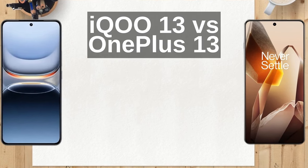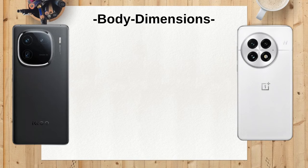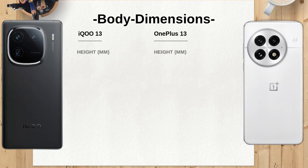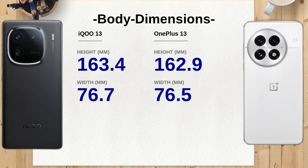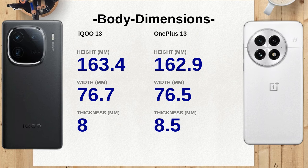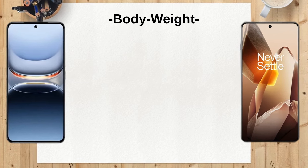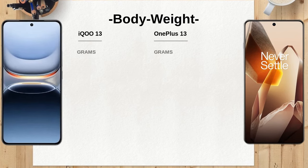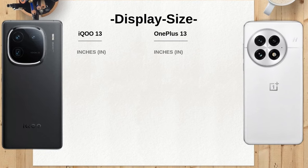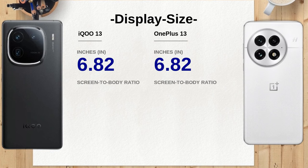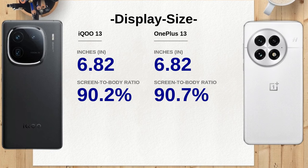The iQO13 measures 163.4 mm in length, making it slightly longer than the OnePlus 13, which is 162.9 mm. This difference might be minimal, but for users who prefer a more compact device, the OnePlus 13 could be the better choice. In terms of weight, the iQO13 ranges from 207 grams to 213 grams depending on the configuration, while the OnePlus 13 weighs 210 grams. The iQO13 offers a bit more flexibility with its weight, which could appeal to users looking for a lighter feel.